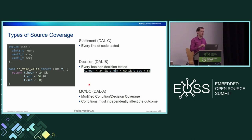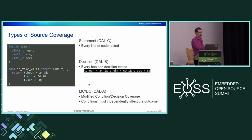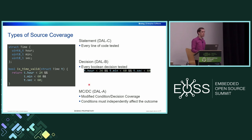High coverage doesn't necessarily imply good tests, but it implies that you're at least testing all the functionality inside that code. For DAL A, it also requires independence — developers aren't even allowed to do their own testing. It has to be a provably independent group that does the testing. So developers are in development, and you have a separate test group that comes up with and runs the tests.